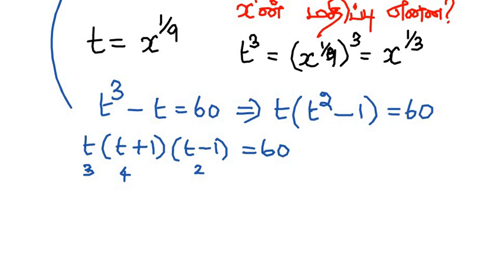When I put 4 here, we get 4 times 5 times 3, which equals 60. So by trial and error method, t equals 4.